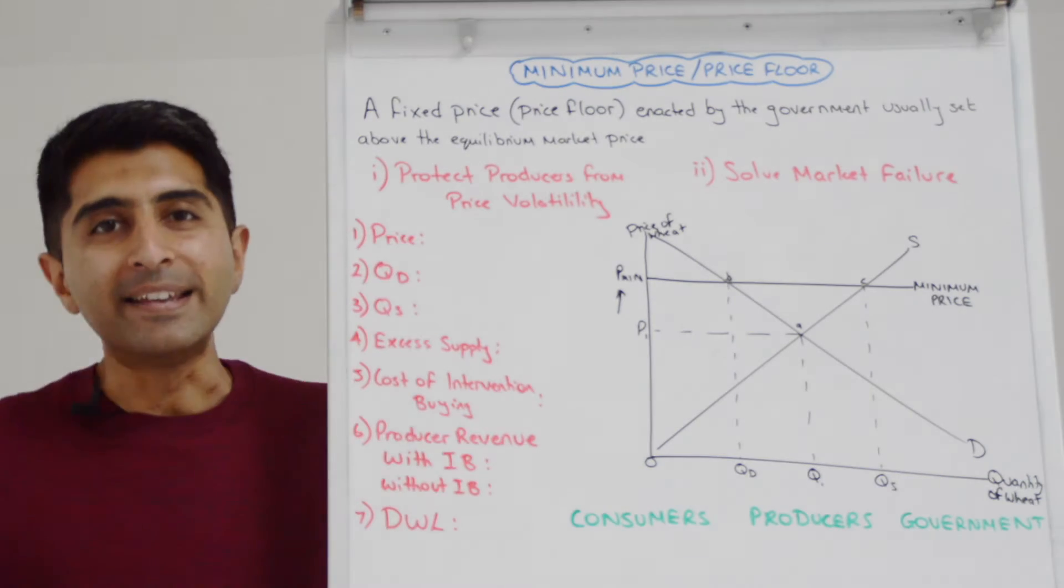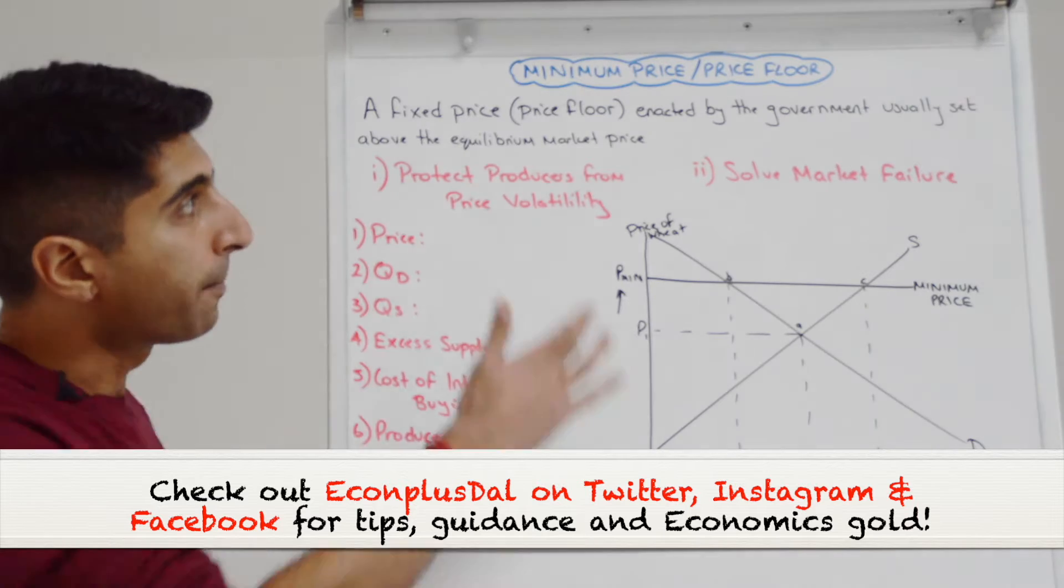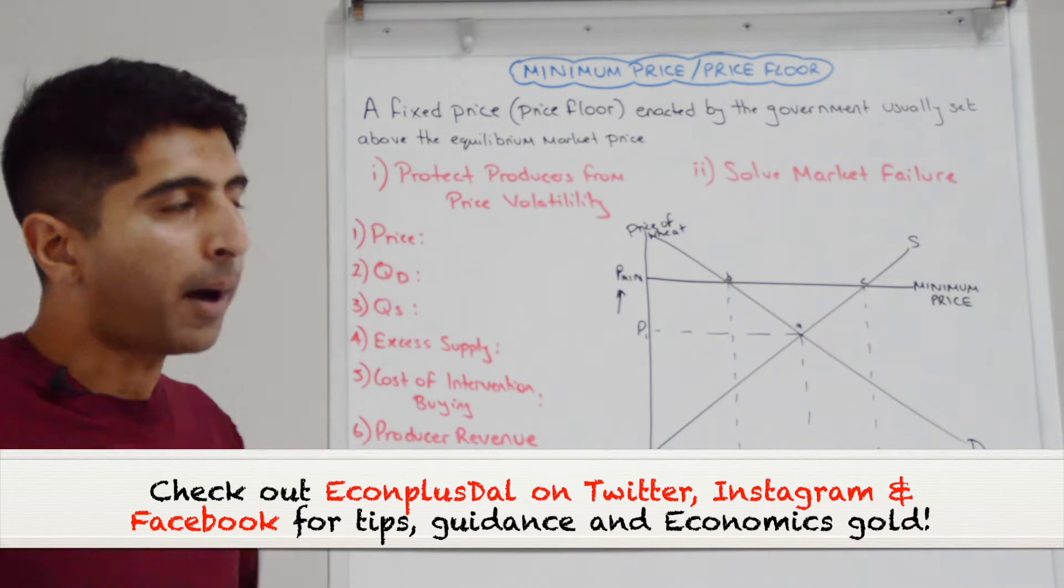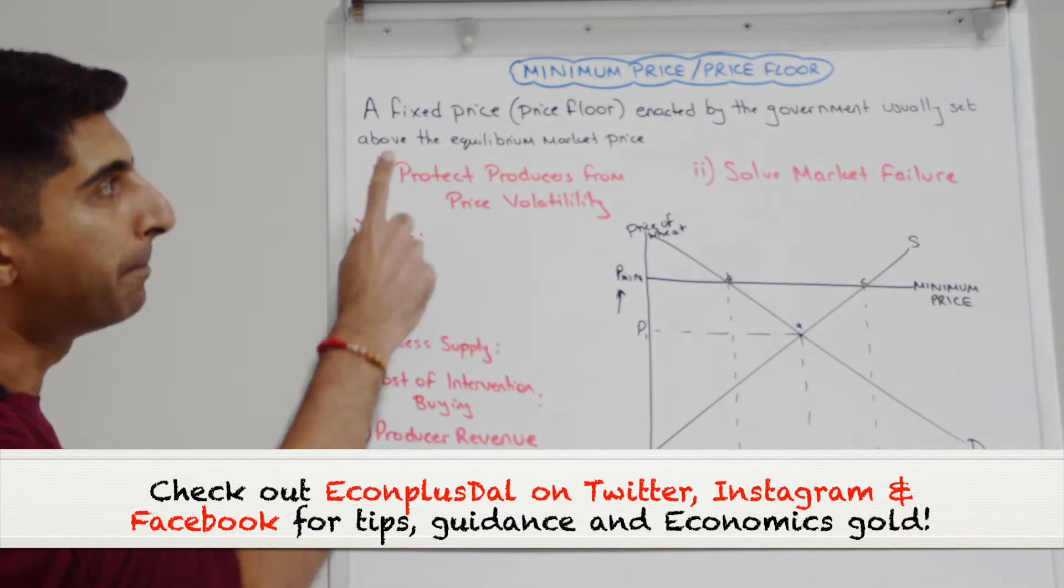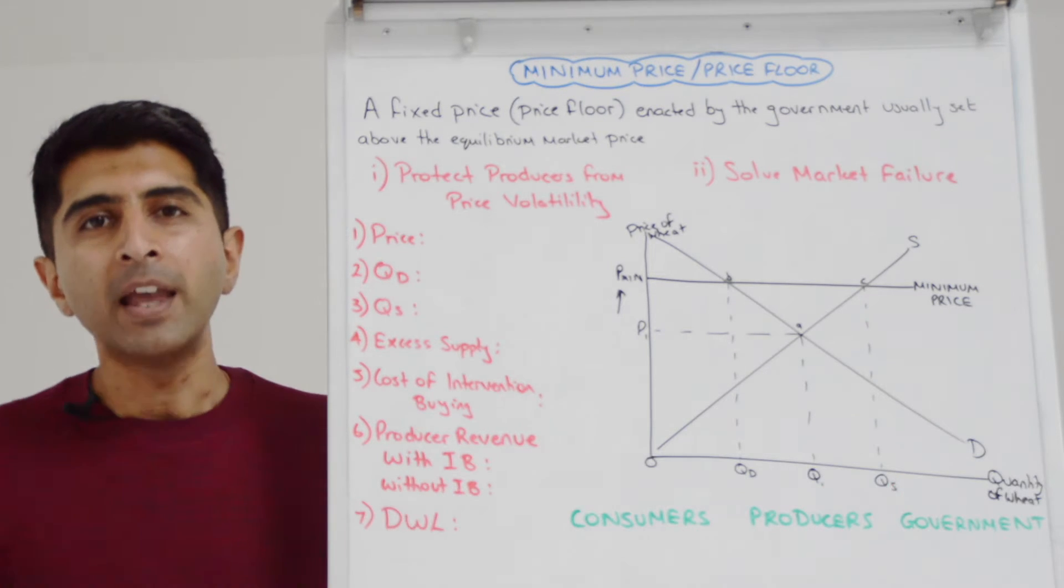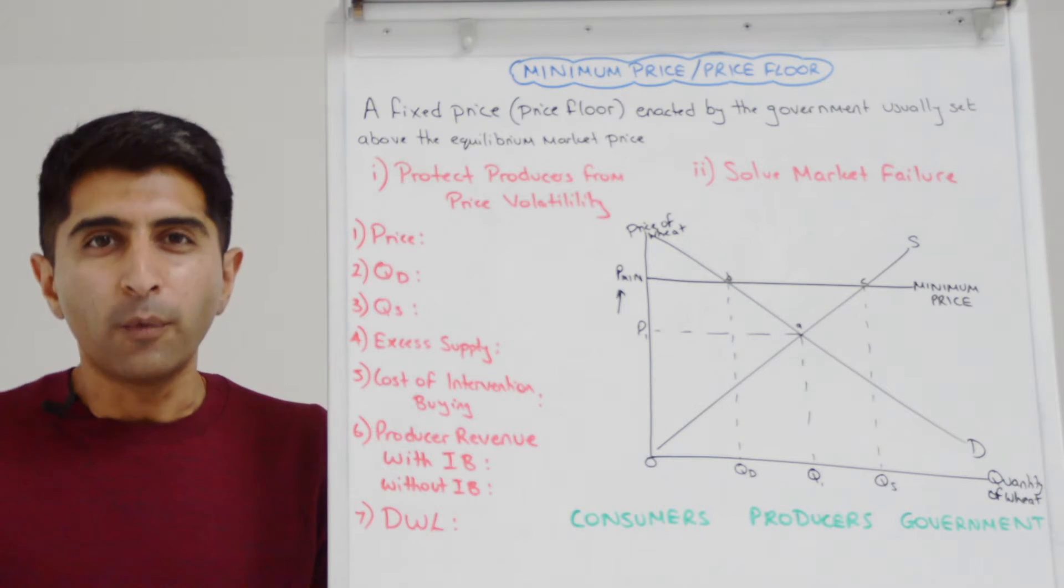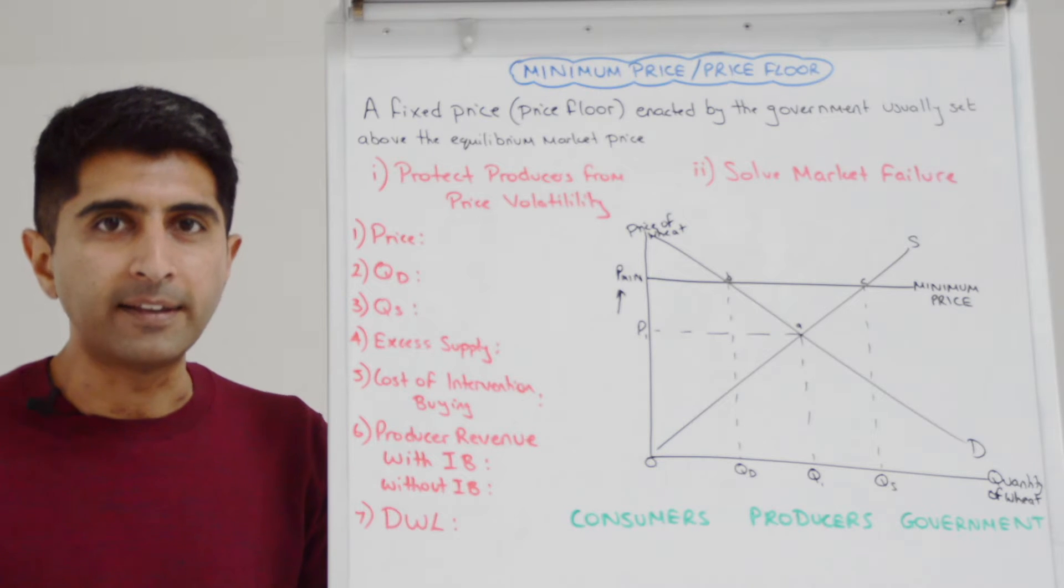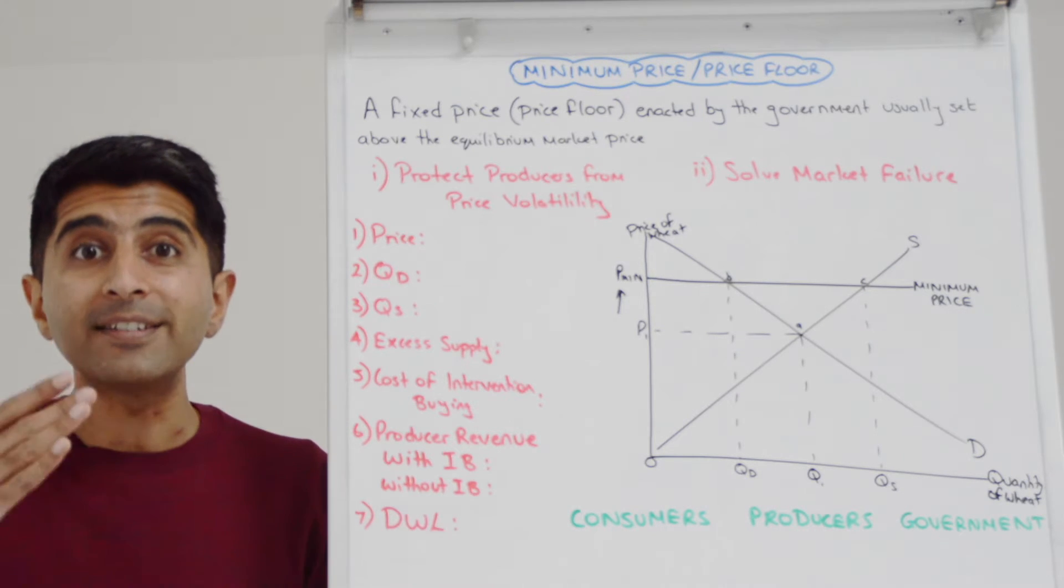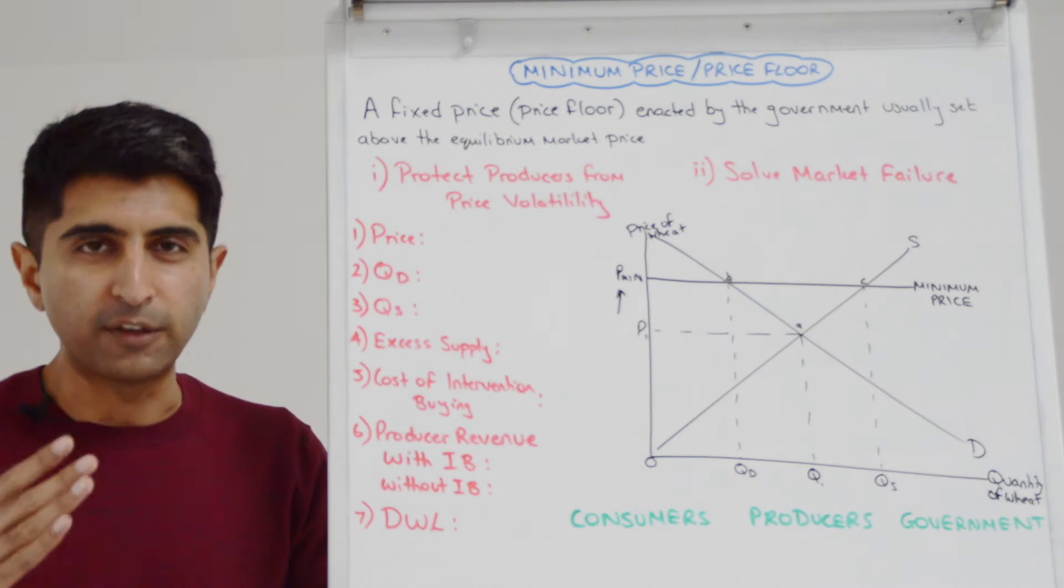Hi everyone, a minimum price is an example of a price control. It's a fixed price or a price floor enacted by the government usually set above the equilibrium market price. So what the government is saying is that the equilibrium price in the market is simply too low.